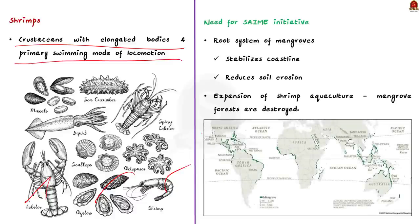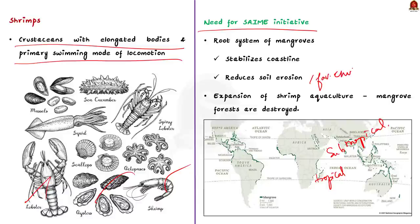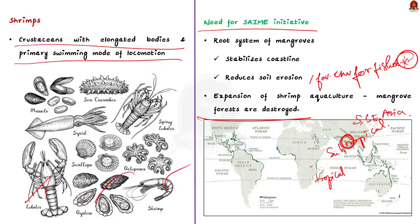Tropical and subtropical mangroves are among the most important and productive ecosystems on earth. The intricate root system of mangroves stabilizes the coastline, reduces soil erosion, and provides a favorable environment for fishes, crabs, and other aquatic organisms. But in recent decades, due to the expansion of shrimp aquaculture and other anthropogenic causes, mangrove forests have been indiscriminately felled — especially in South and Southeast Asia. In India, this has occurred in West Bengal where the famous Sundarbans mangrove forest is located. This has resulted in degradation of the natural landscape and made brackish water shrimp cultivation unsustainable. To address this problem, the SAIME initiative was introduced.